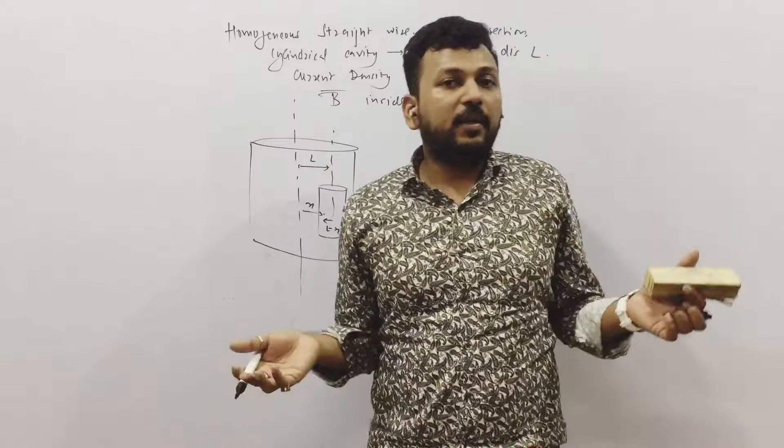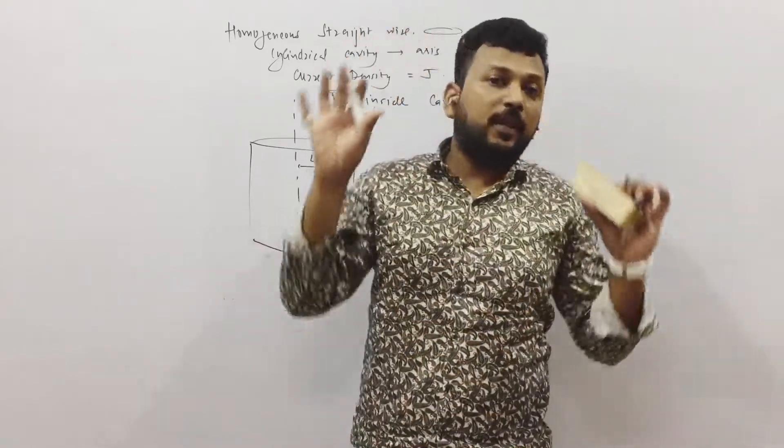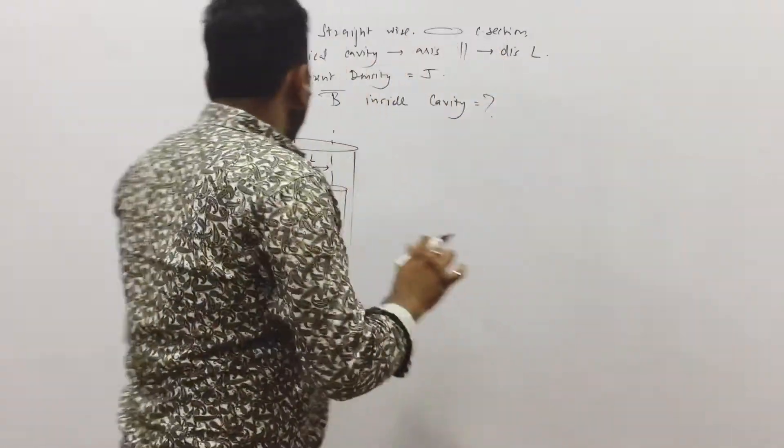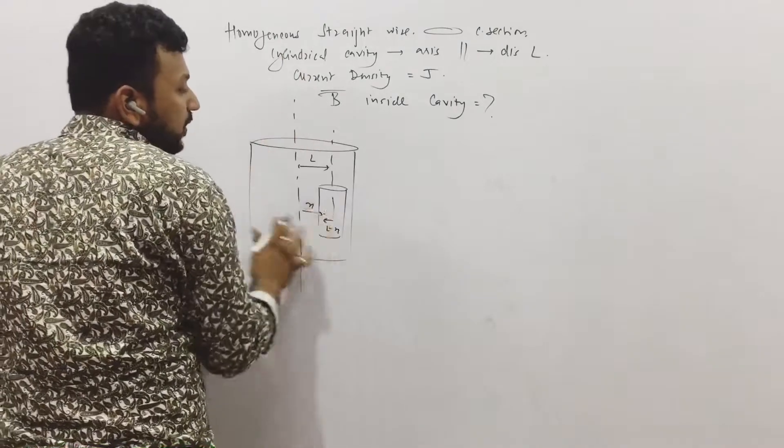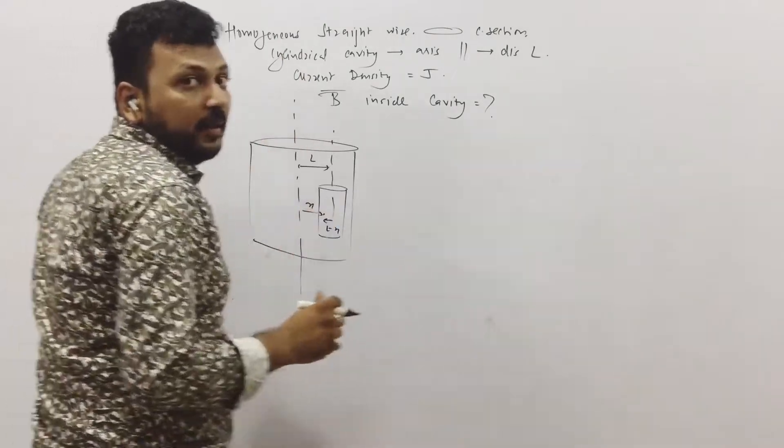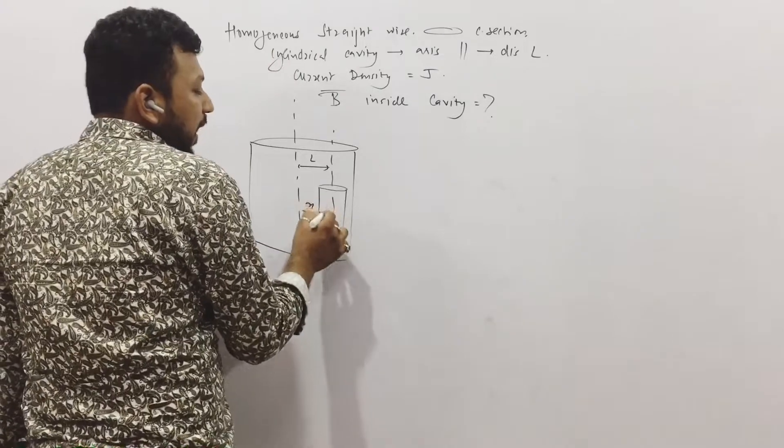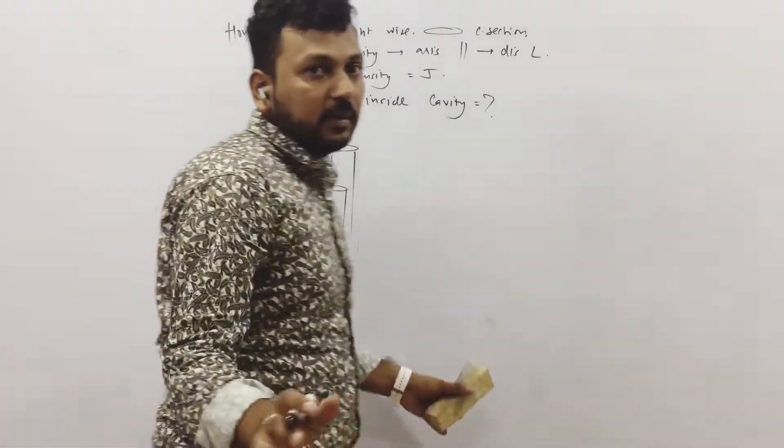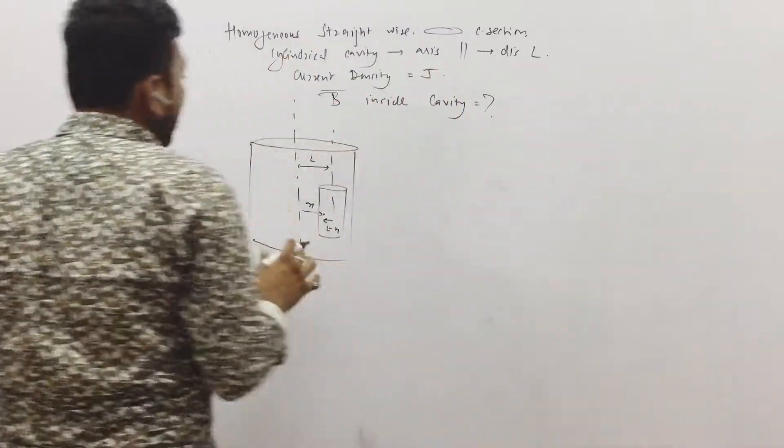suppose there is no cavity inside initially, so there is uniform thing everywhere. We will find the magnetic field of the whole cylinder at this point and then we will subtract the effect of this cylinder at this point and then we will have the final answer. This is how we have to do it.